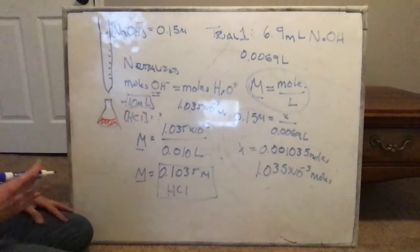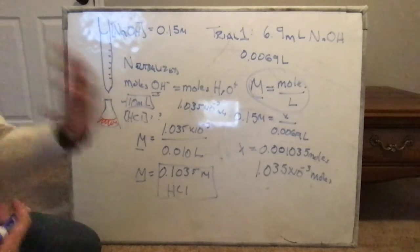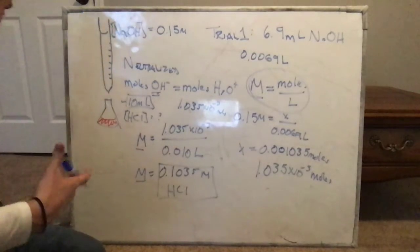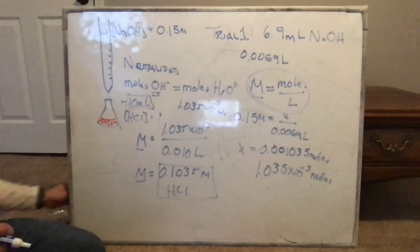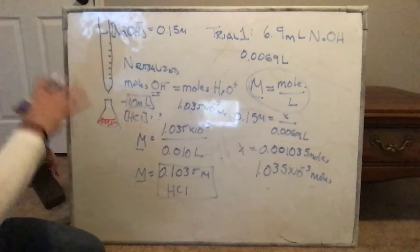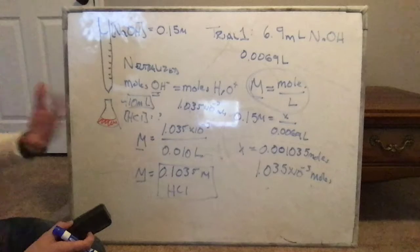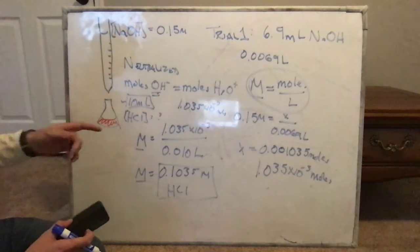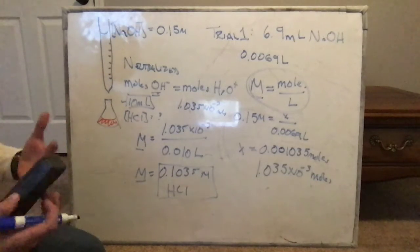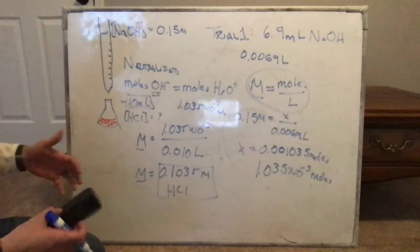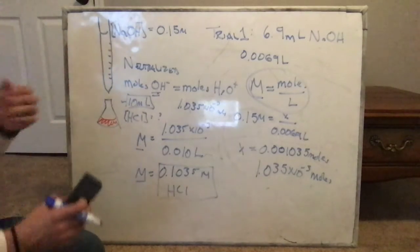That's just trial number one. Go ahead and do that for your three trials, take an average, and come up with the best guess. What is your best guess for the concentration of HCl after we did this titration? This is how we can use a strong acid and strong base to identify the concentration of an unknown substance. This process is called titration. That's the first part.